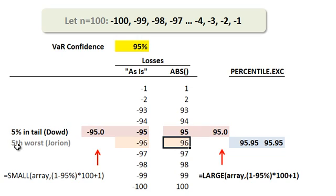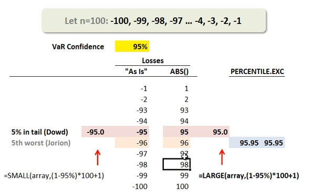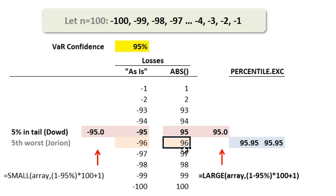First, Philippe Jorion would pick out the fifth worst loss. Coming down the list: 100 is the first worst loss, second worst, third worst, fourth worst — the fifth worst loss is a loss of 96. Under 95% confidence, Jorion would say 96 is the VAR. We could state that as: the 95% confidence VAR is $96, meaning 5% of the time we expect to lose 96 or worse.